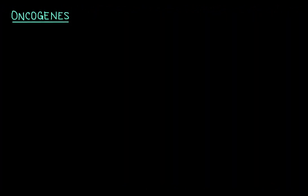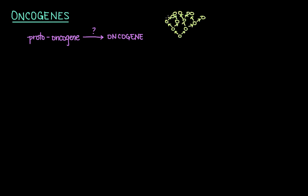Oncogenes are genes that code for proteins that normally direct cell growth. They start out as proto-oncogenes, and then something happens to convert that proto-oncogene into a full-blown oncogene — in essence some sort of tumor-inducing agent, or it could also be totally spontaneous. Proto-oncogenes code for proteins that help to regulate cell growth and differentiation, and the essence of a tumor, whether cancerous or benign, is unregulated cell growth.